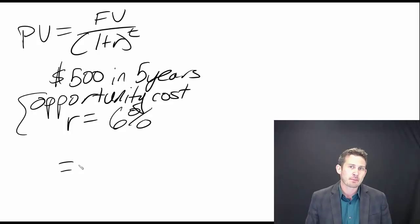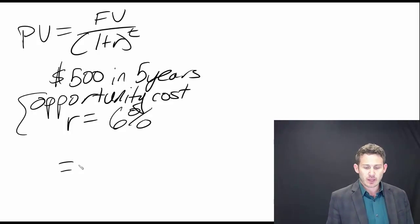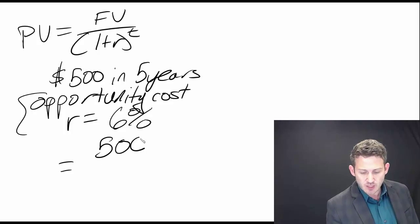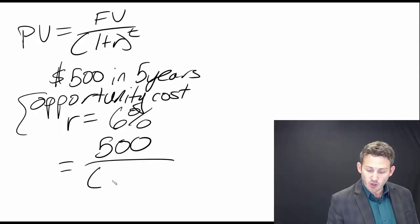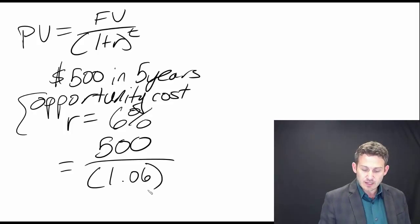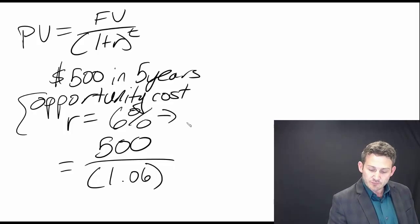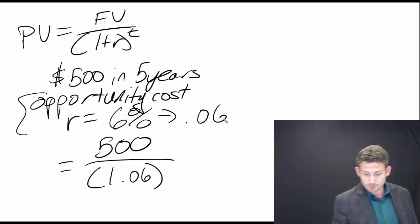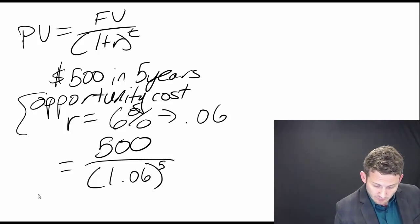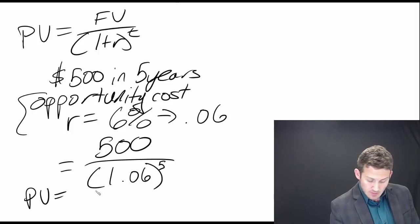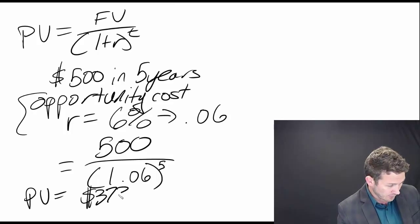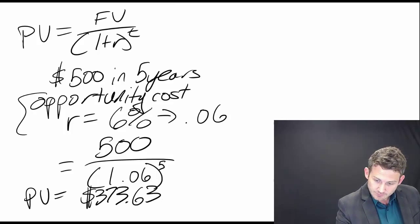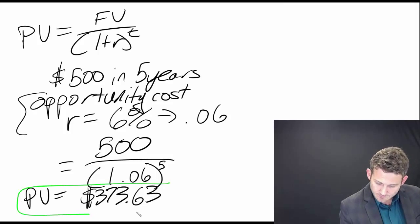What we're going to do is take $500 - that's our future value - and divide that by 1 plus r. R is 6%, so it's 1.06. When we convert 6%, we move the decimal point two places to get 0.06. Then it's raised to the fifth power, and we get a present value of $373.63.